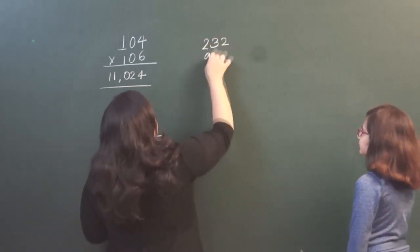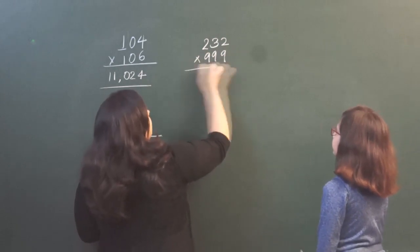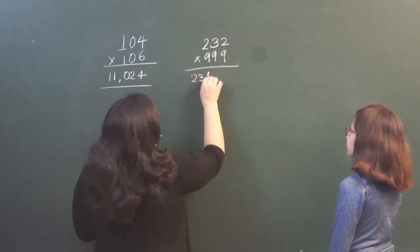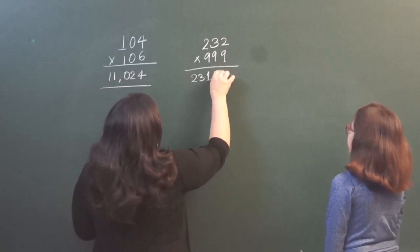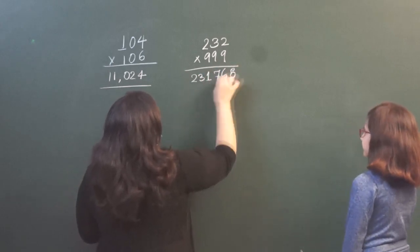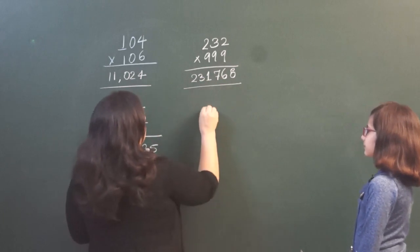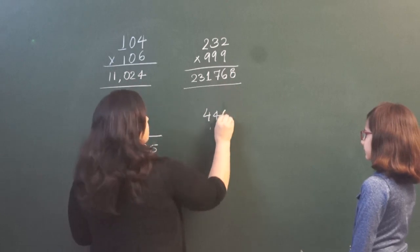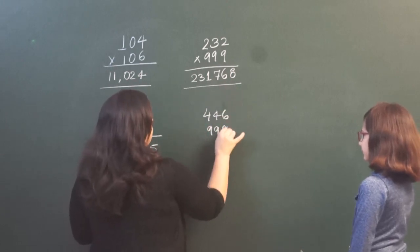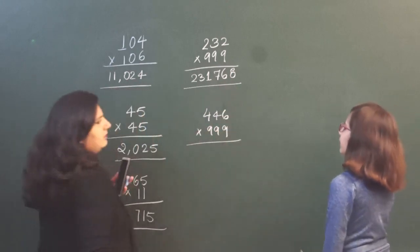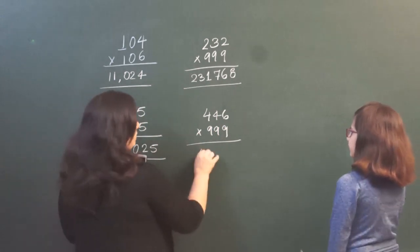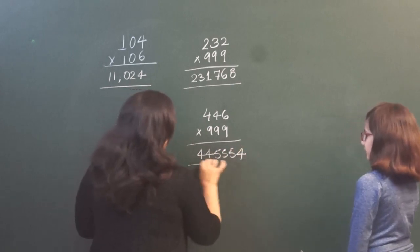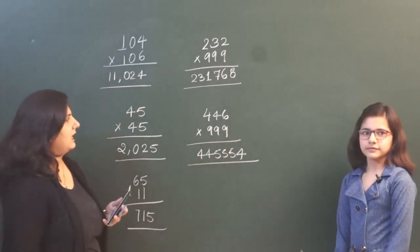232 × 999. The answer is 231768. Yes, that's the correct answer. Next: 446 × 999. The answer is 445554. That's the correct answer.